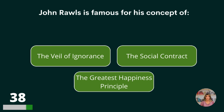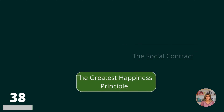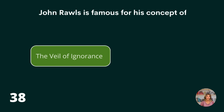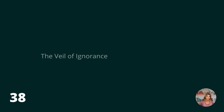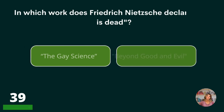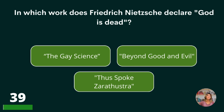John Rawls is famous for his concept of the veil of ignorance, the social contract, or the greatest happiness principle? The veil of ignorance.